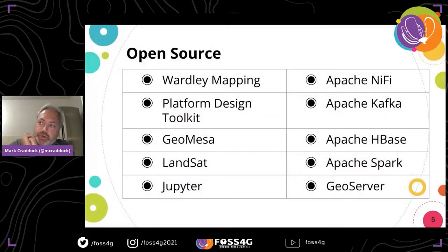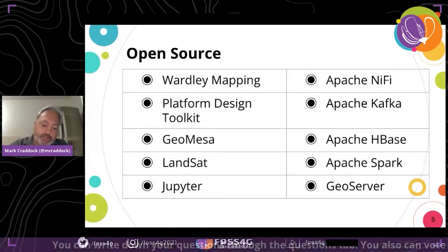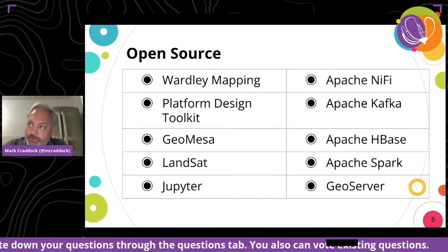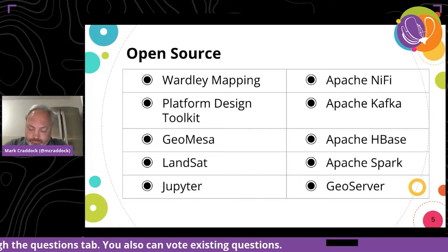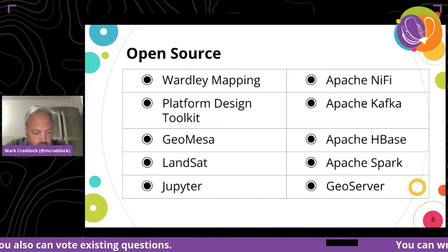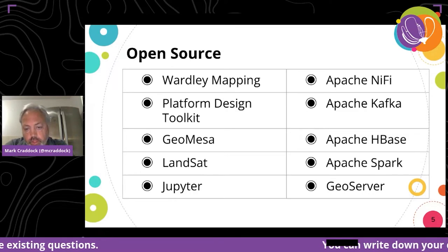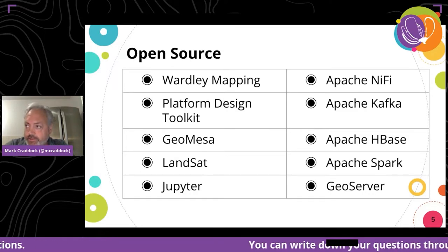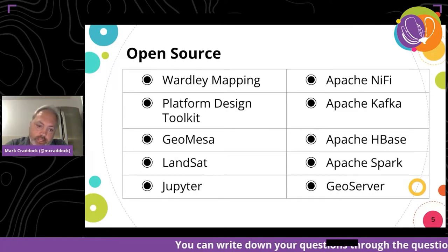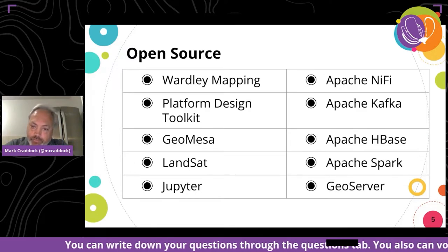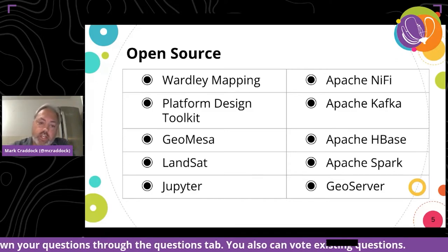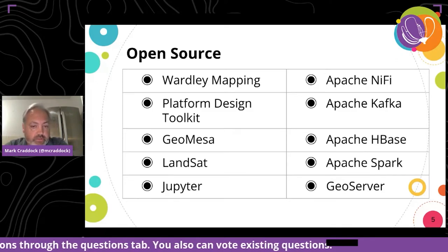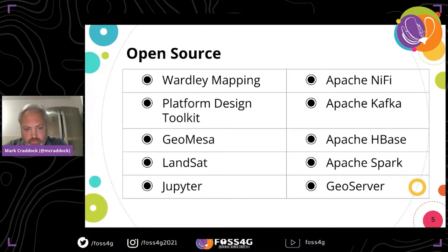If you've just joined to see what I'm going to talk about, I can tell you in about 30 seconds. We used open source to save the UK economy about 12 billion — probably more. We used a range of open source tools and components: GeoMessa, Landsat data, Jupyter Notebooks, Apache NiFi, Kafka, HBase, Spark, and GeoServer. We also used open methodologies: Wardley Mapping and the Platform Design Toolkit — both Creative Commons.